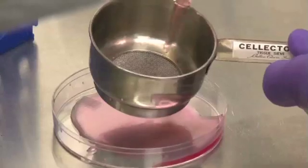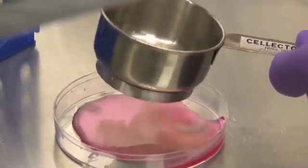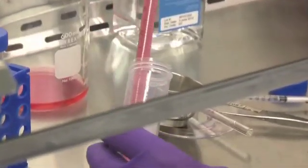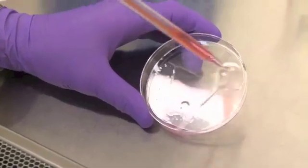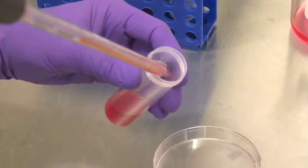Flush the cells off of the pestle and through the screen with 4 or 5 mL of media. Collect it with a sterile transfer pipette and transfer to a 50 mL conical tube. Rinse the collection plate once more with media to retrieve any residual cells left on the plate.